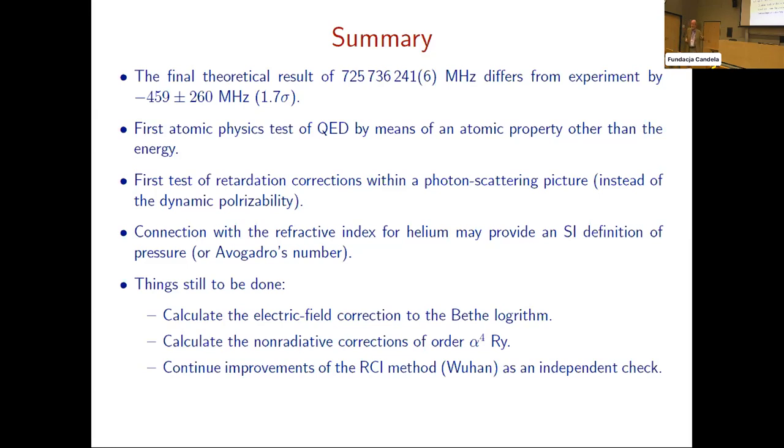Things still to be done: calculate the electric field correction to the Bethe logarithm. We made the assumption that it's the same as for the ground state to within 1% accuracy. That needs to be checked. The non-radiative corrections of order alpha to the 4 - this is the dominant source of uncertainty - needs to be done, but it's at the 6 megahertz level, relatively small. And also to continue improvements of the relativistic CI method by the Wuhan group - their work provided an important independent check of all of these calculations to show that we haven't missed a factor of two or got a sign wrong. It provided an important way of checking our results.